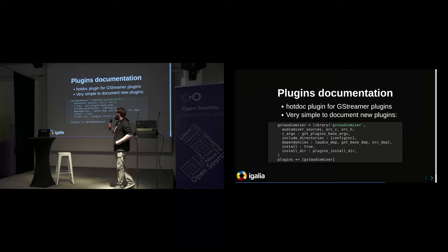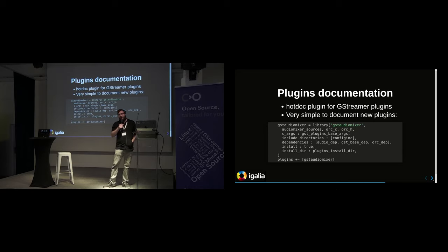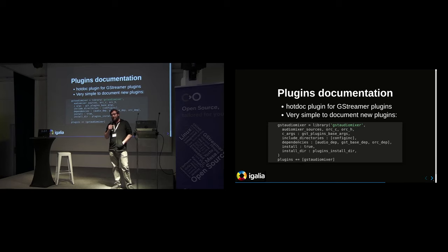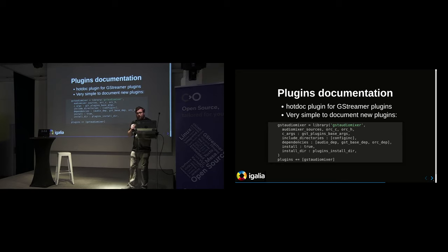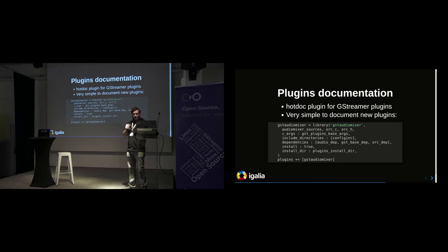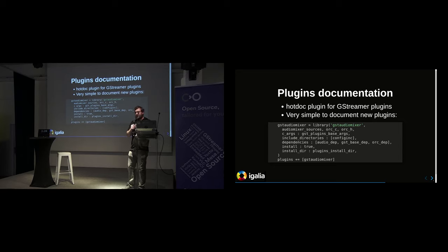We also have all that running on CI, so for every merge request you make, we basically generate the documentation. You can even see it online directly from GitLab, so you can see what is happening, and you don't even have to generate the documentation on your side. If you want to, it's very simple — it's just one command. And it's nice to be able to review the documentation in its final form directly on the merge request.